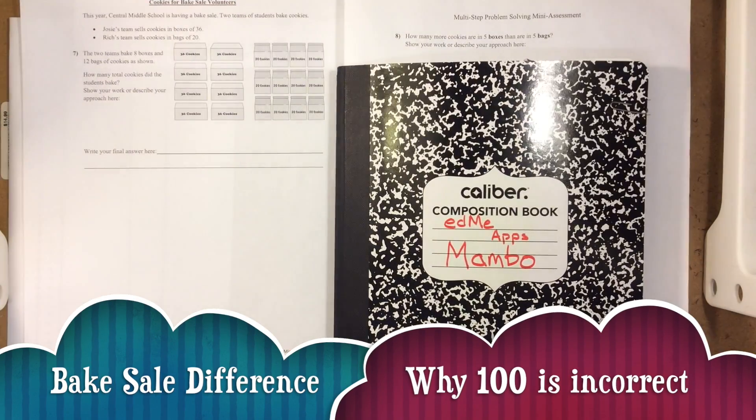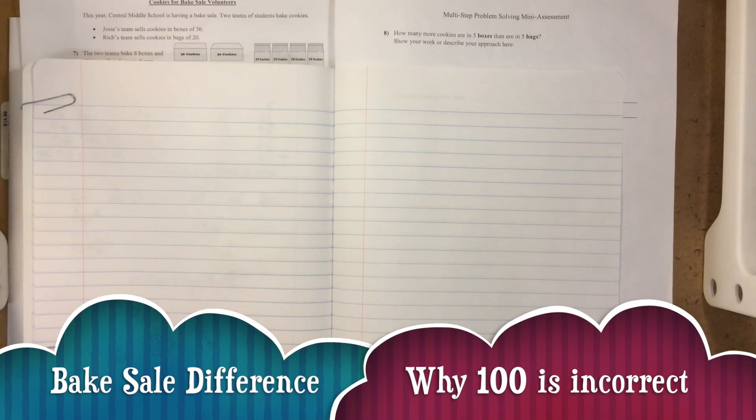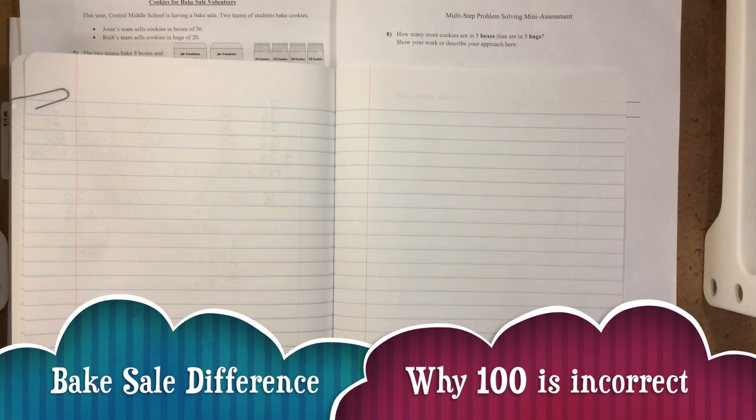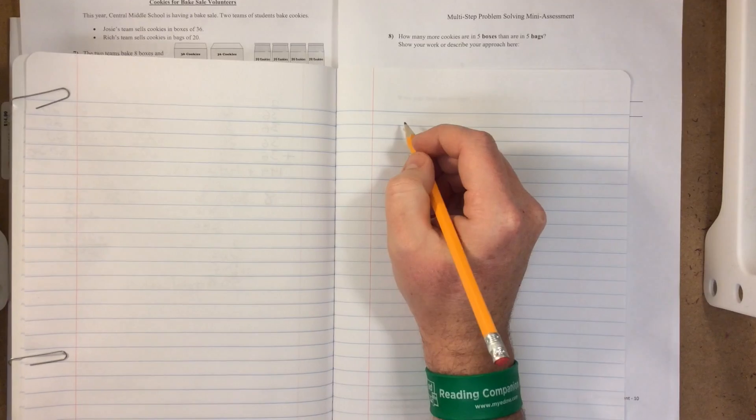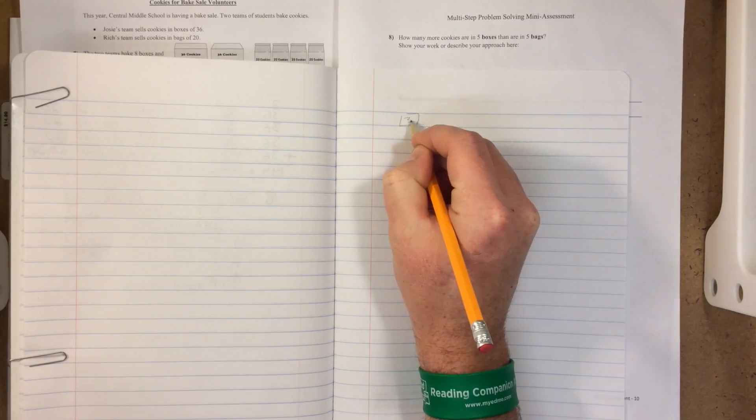If you answered 100, you actually found the amount of cookies in 5 bags, but this is asking how many more cookies are in 5 boxes than in 5 bags. So we can draw out the 5 boxes and the 5 bags and solve from there.